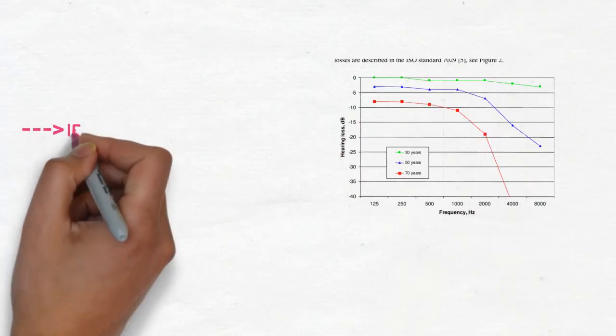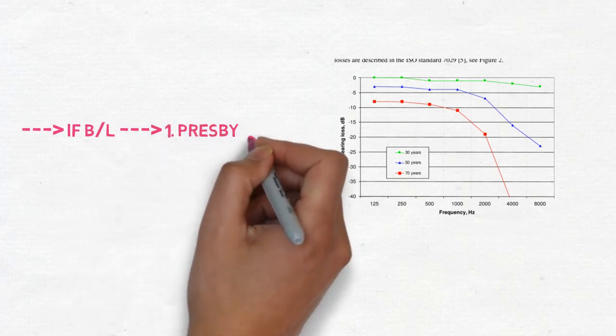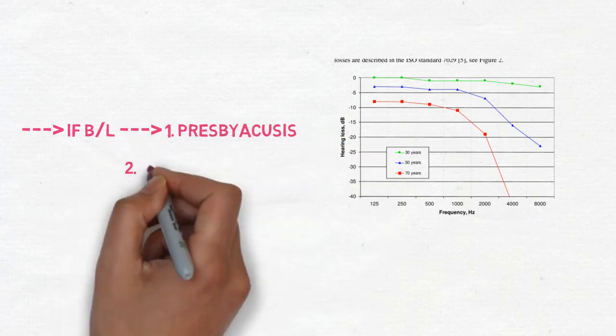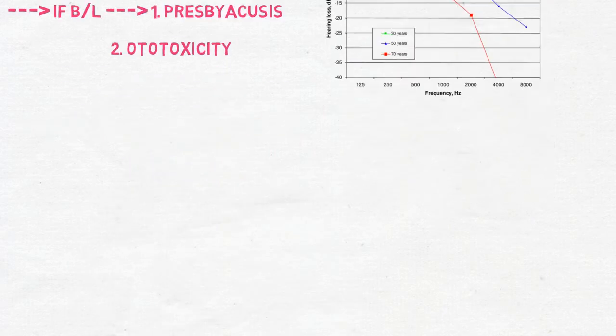Look at this graph. There are two bilateral swooping curves. So if there are two bilateral swooping curves always remember that there may be chances of presbycusis or ototoxicity.